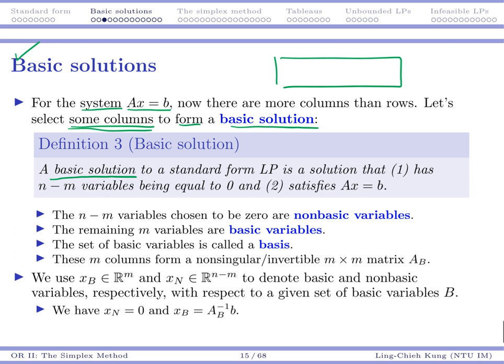A basic solution to a standard form linear program is a solution that has n minus m variables being equal to 0, and it satisfies Ax equals b.